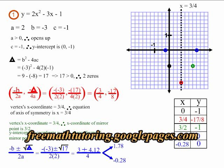There is no need to find any extra points for example 1. Its vertex, its y-intercept and mirror point, and its two zeros give us the five points that we need.